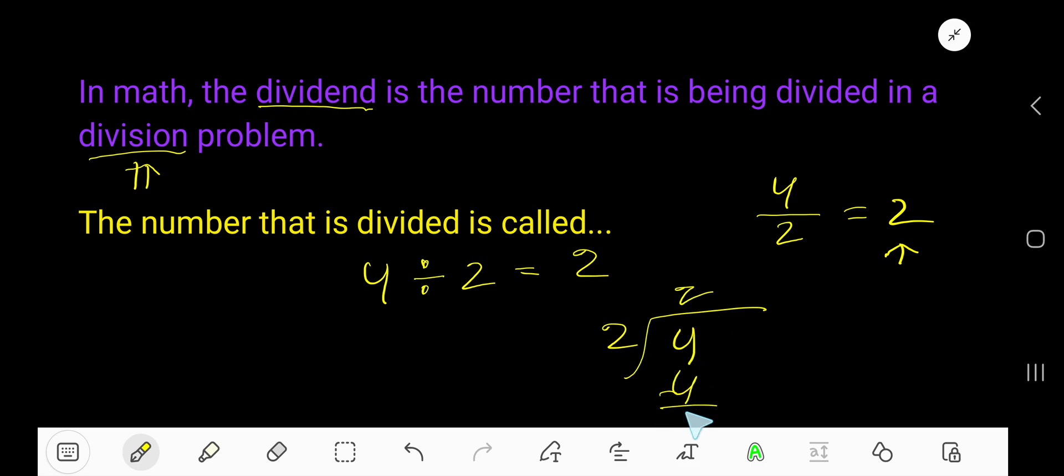times two is four. Subtract, and you get zero. So zero is the remainder or leftover. The number that is divided is called the dividend.